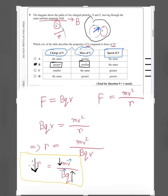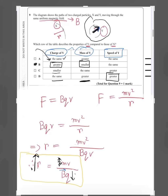Checking the other options: Option A has the same charge but greater mass for Y — greater mass would result in a larger radius, not smaller, so A is incorrect. Option C has the same charge but lower charge would give higher radius, also incorrect. Option D has the same charge but greater mass and speed — but particles should have the same speed; this is also incorrect. So the answer is B.